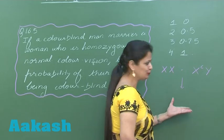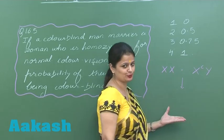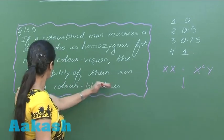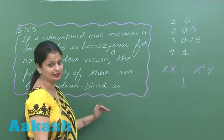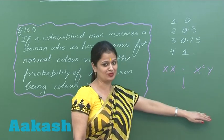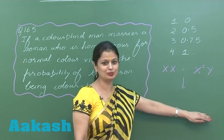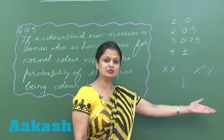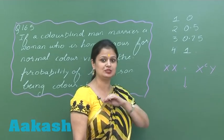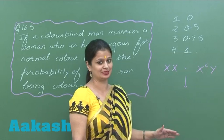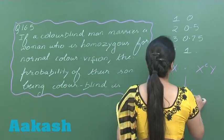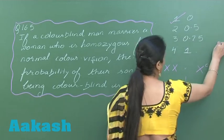Without doing the cross, we can easily determine the probability of their son being color blind. Since male-to-male transfer of the gene is totally absent, the probability of their son being color blind is 0%. So the right option for this question is option number 1.